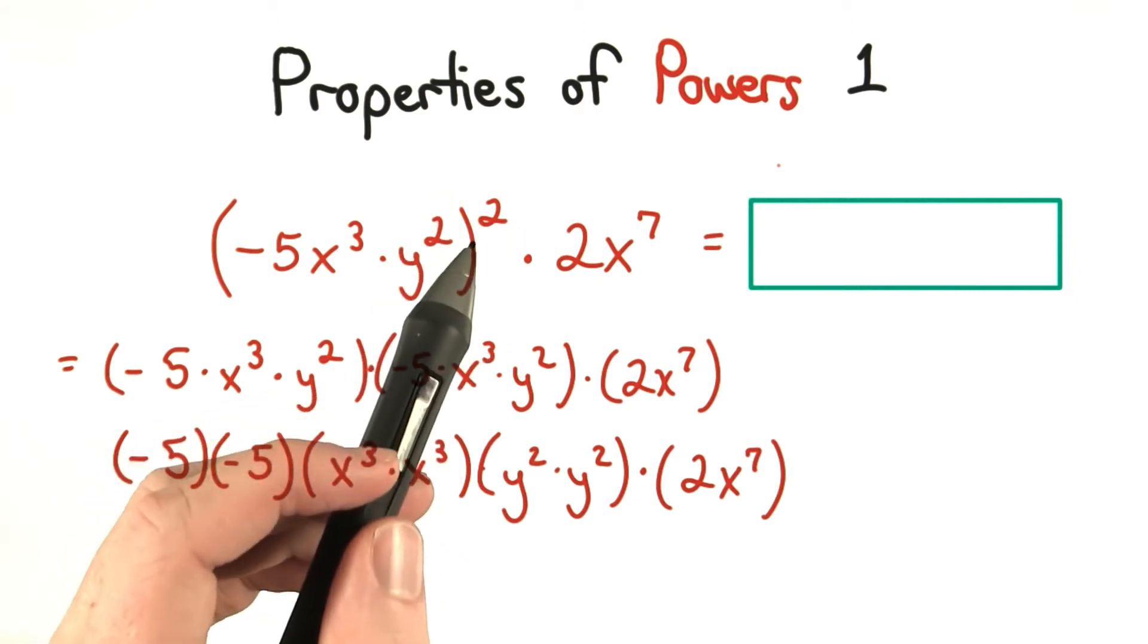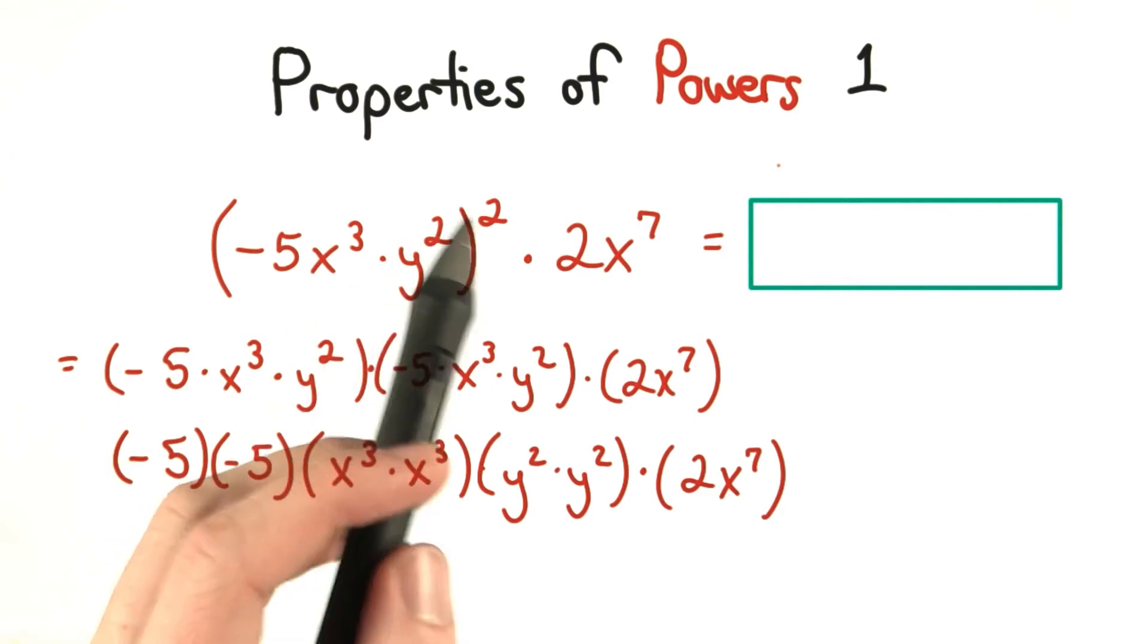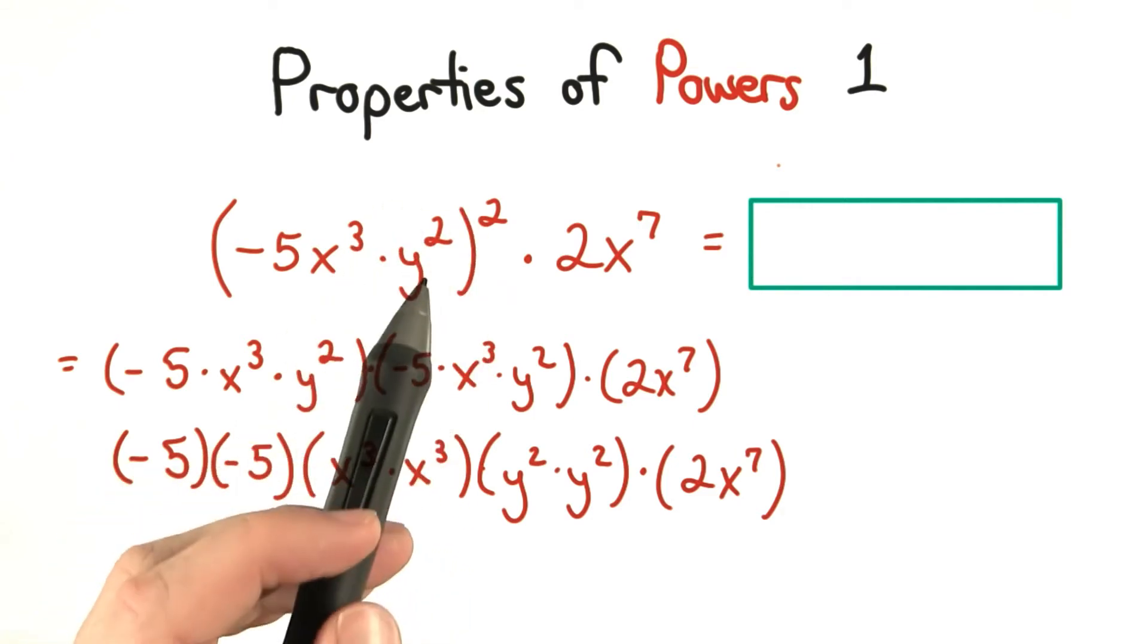That would have been the same if I would have just distributed this square to each of the terms. I would have had 2 negative 5's, 2 x cubed's, and 2 y squared's.